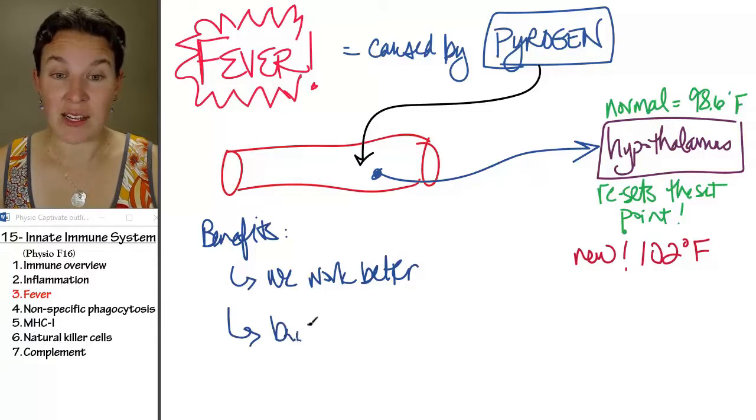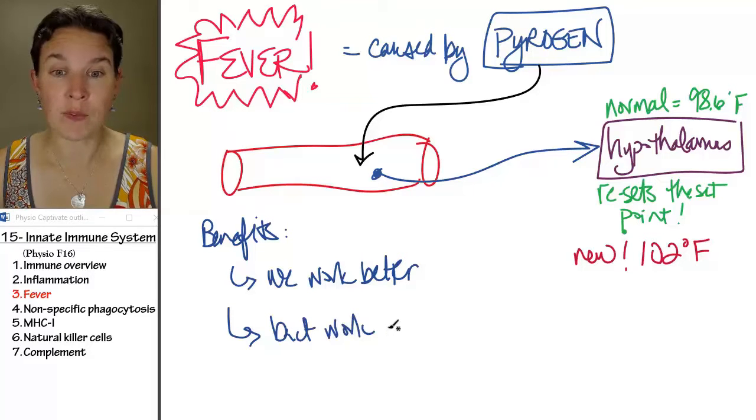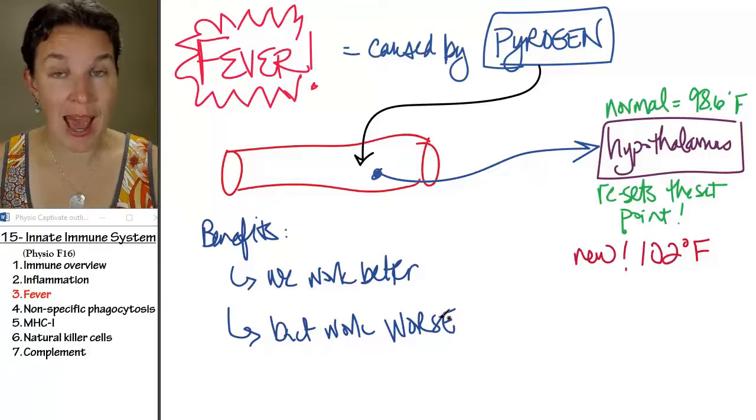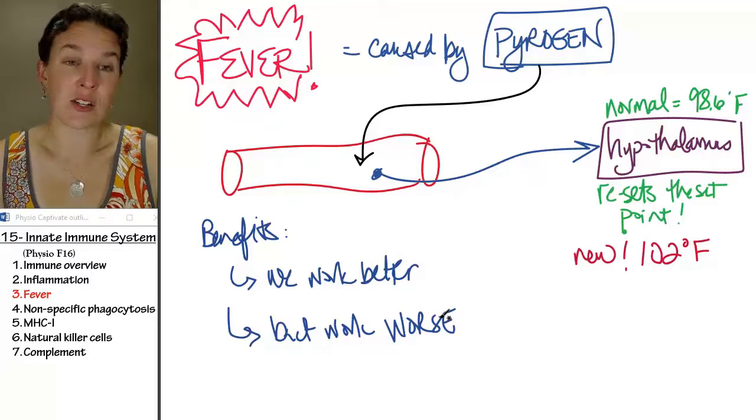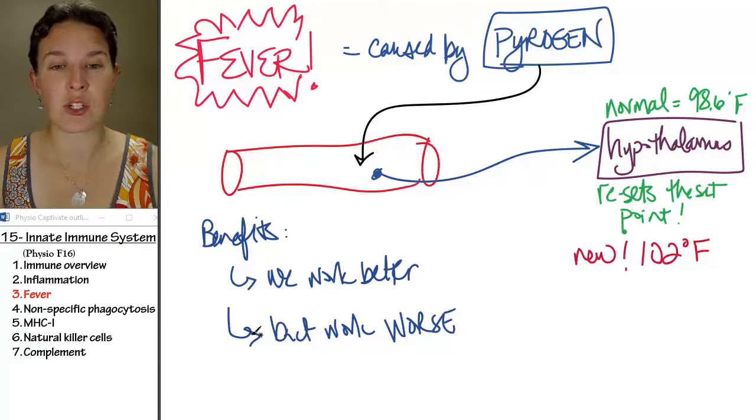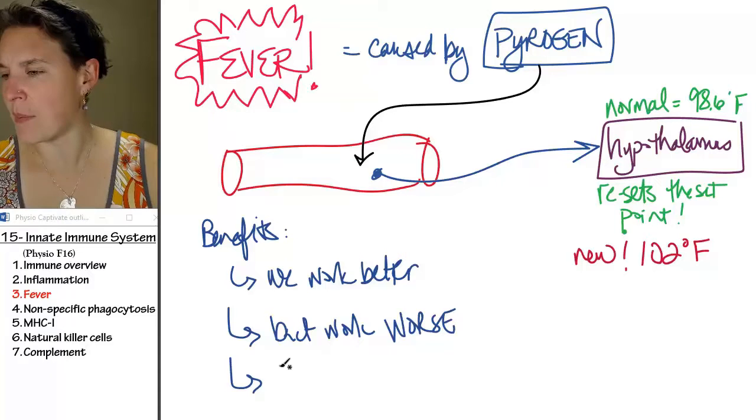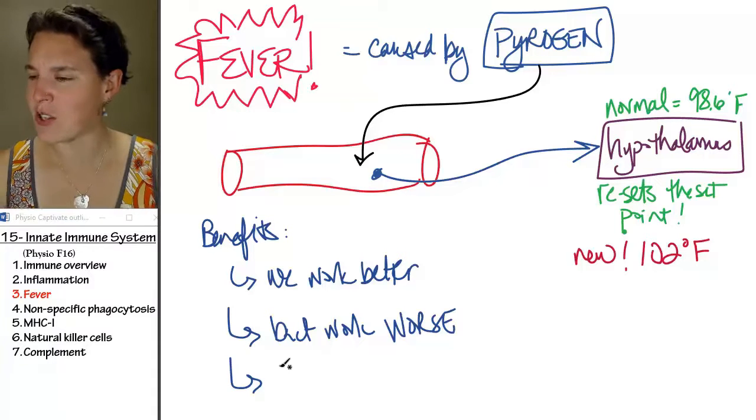Some bacteria work worse. They are not functioning optimally at that higher temperature, so they're easier to destroy if we increase the temperature. And there was also something about ions.